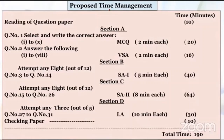Section B — attempt any 8 out of 12, meaning you have to write only the answers of 8 questions out of 12. Question 3 to Question 14, short answer type 1. Each question you should take only 5 minutes. Total time for Section B: 40 minutes. Section C — attempt any 8 out of 12. Question 15 to Question 26, short answer type 2. Each question you should take only 8 minutes. Total time for Section C: 64 minutes.